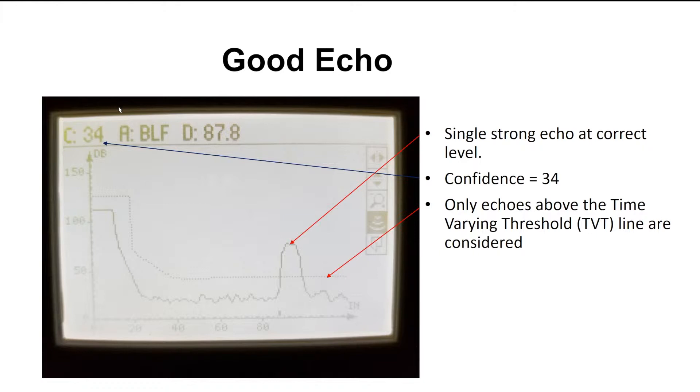Next to that, we have A, which stands for algorithm. In this case, the algorithm is the best of largest and first. And then next to that, the D or distance from the center face to the level we're selecting is 87.8 inches.